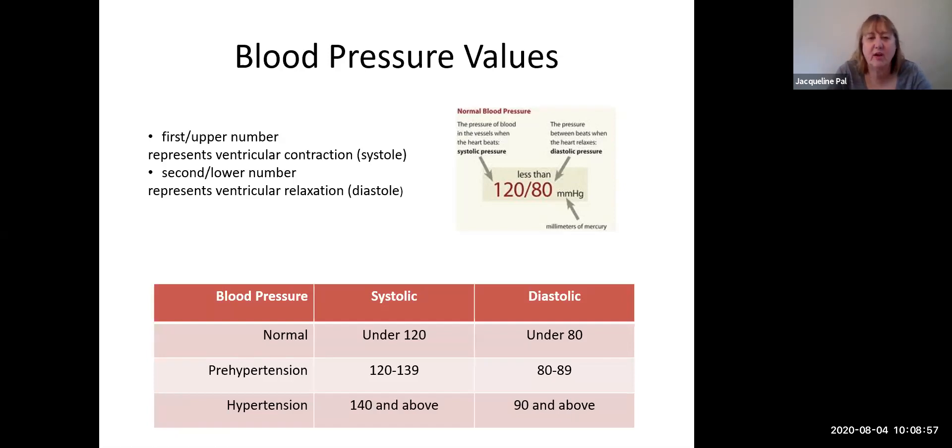The normal adult blood pressures, people like to say 120 over 80, when in fact it's less than 120 systolic and less than 80 diastolic. If you have a systolic blood pressure of 140 and above, by definition you have high blood pressure, also known as hypertension. If you have a diastolic pressure of 90 or higher, you also have high blood pressure. You do not need both of them to be above their magic numbers, you only need the systolic or the diastolic.